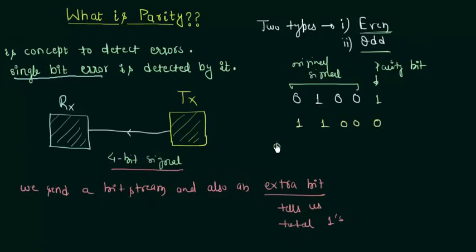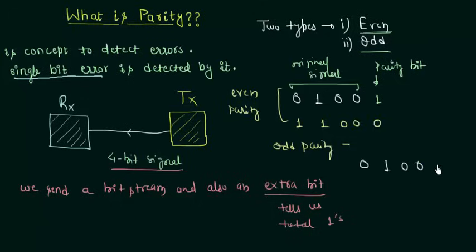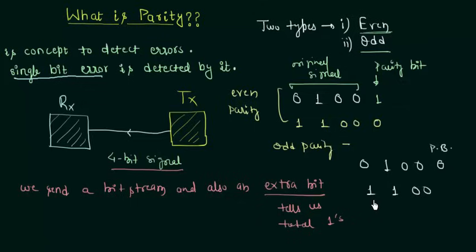Now we will talk about odd parity with a 4-bit example. Take the same signal 0 1 0 0. In odd parity we want the overall signal including the parity bit to have an odd number of 1s. Here we already have an odd number of 1s, so we add 0 as the parity bit. For signal 1 1 0 0, the number of 1s is even, and in odd parity we want the total to be odd, so we add 1 as the parity bit.